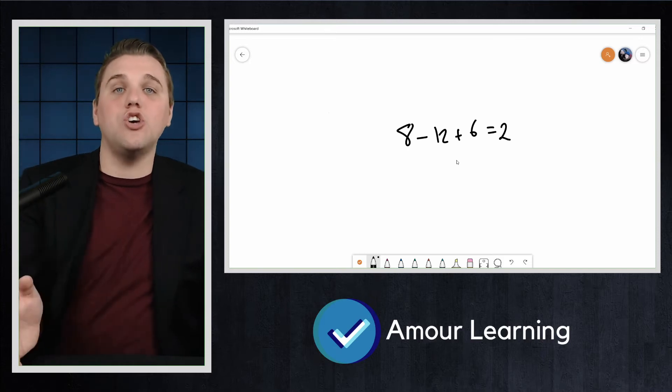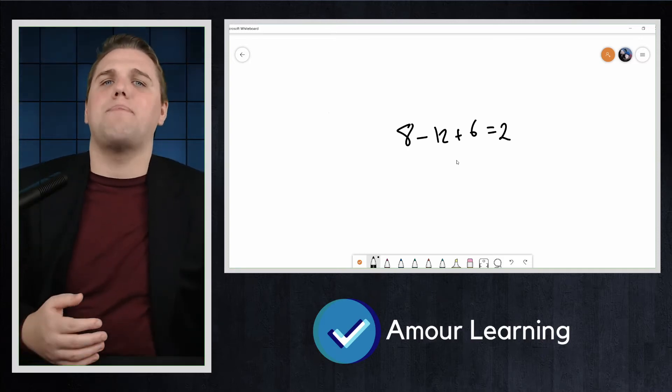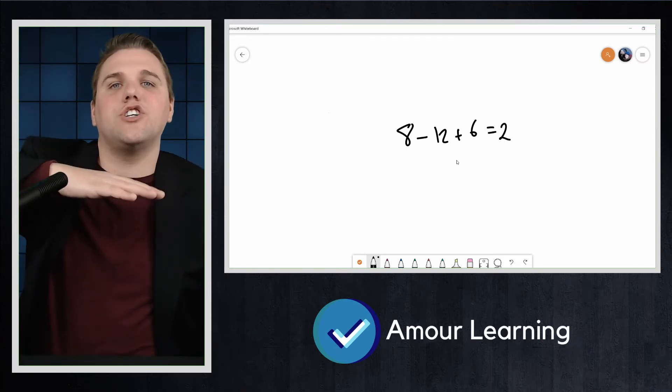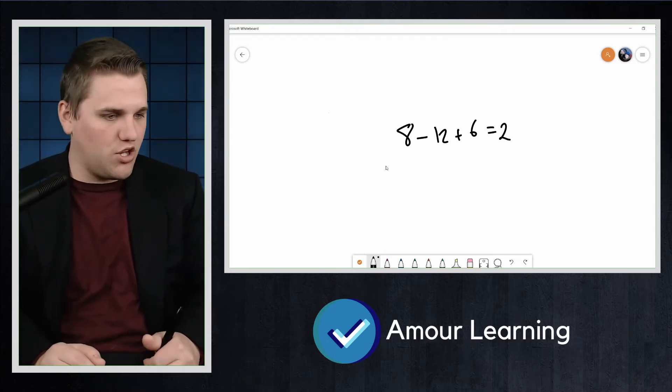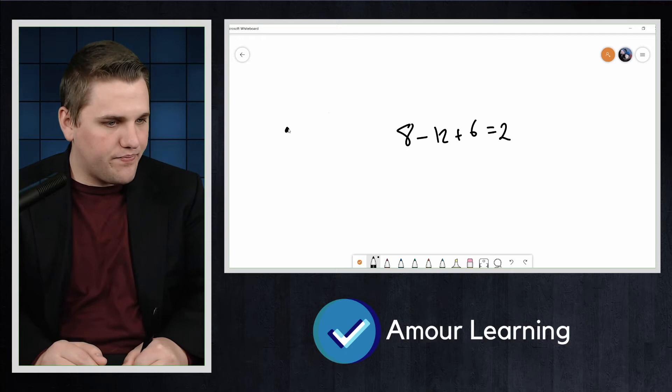We can represent a cube as a planar graph by projecting the vertices and edges onto the plane. One such projection would look something like this. Maybe this is the bottom face of the cube.